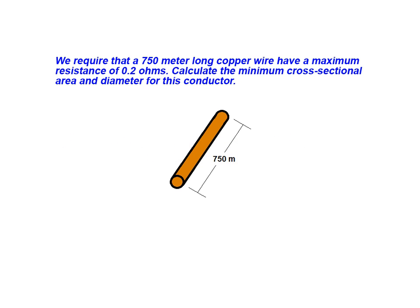In this example, we require that a 750 meter long copper wire have a maximum resistance of 0.2 ohms. We are asked to calculate the minimum cross-sectional area and diameter for this conductor.